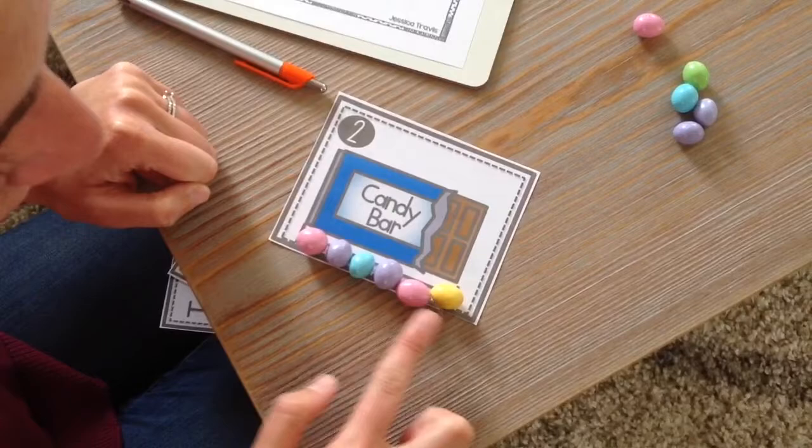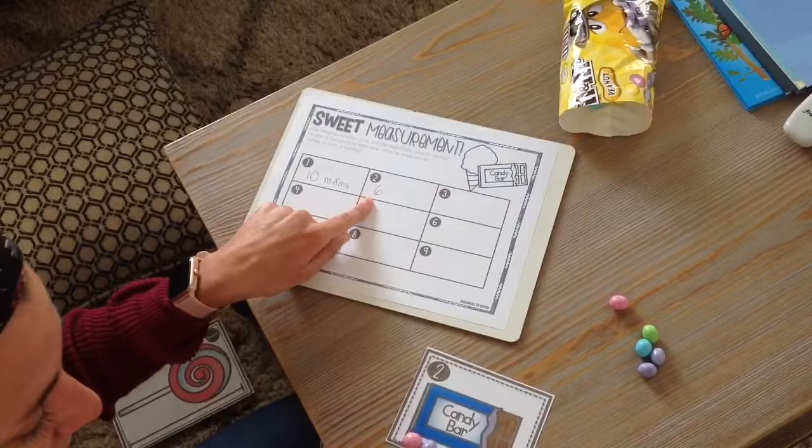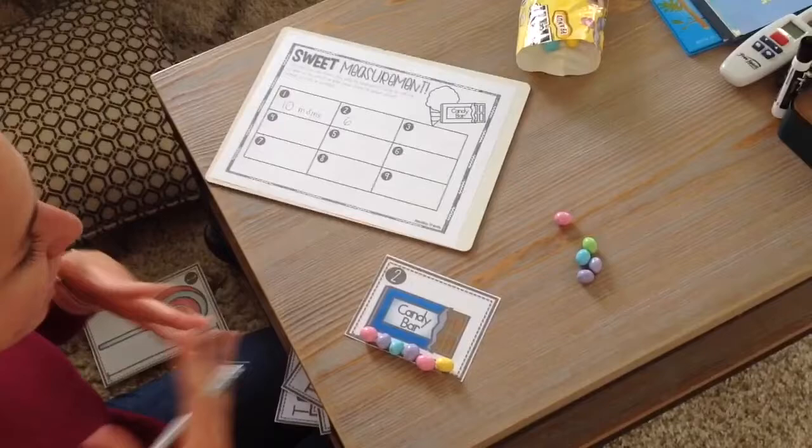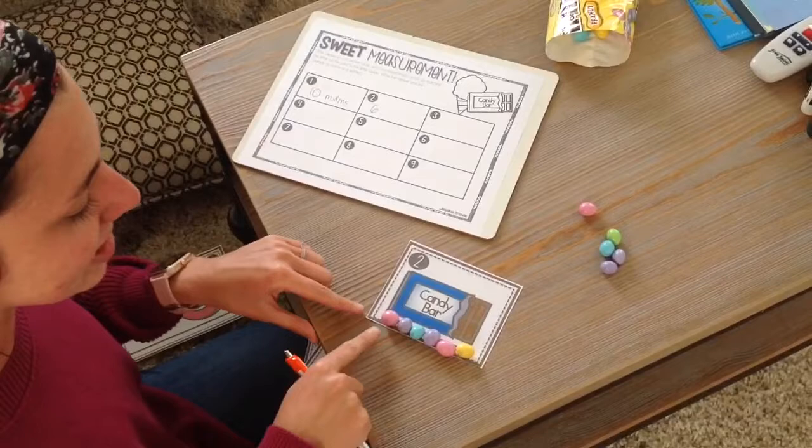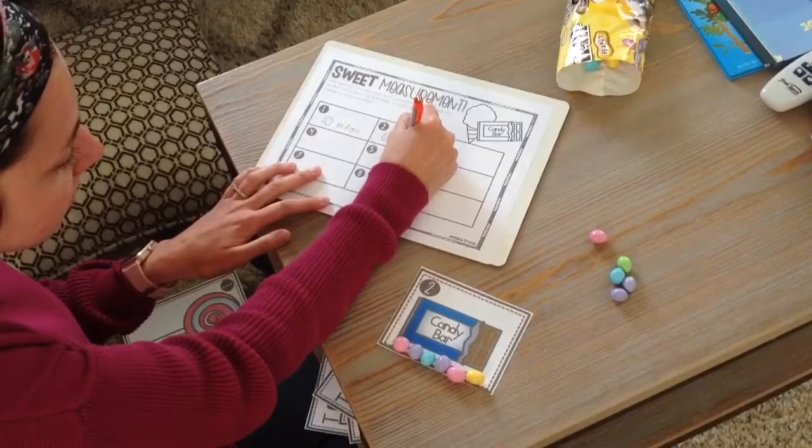So I would say that the candy bar is six, right? No, wait a second. I forgot my label again. I really like unicorns, so I'm going to go ahead and write six unicorns. Oh, no, no, no, wait. I really like pirates too. So I'll write six pirates. No, that doesn't make any sense. I have to use the unit that I worked with. So I'm going to again say six M&Ms.